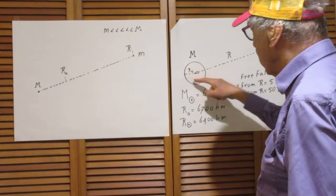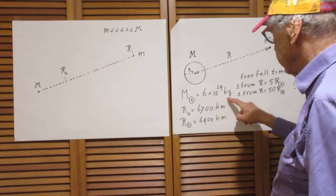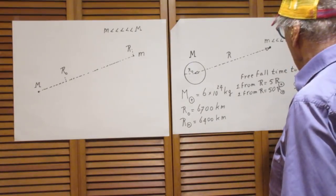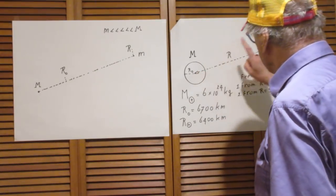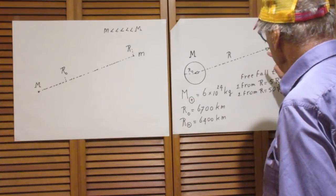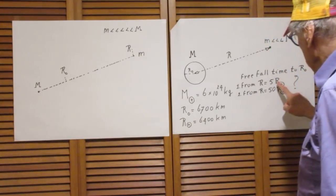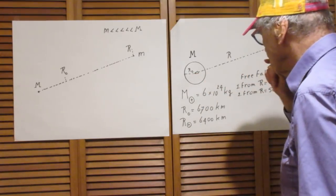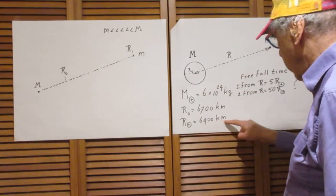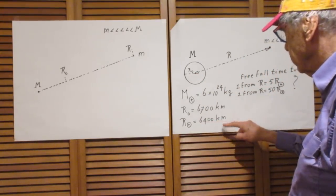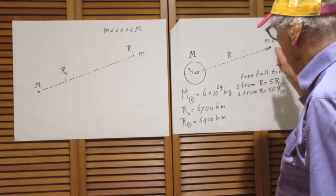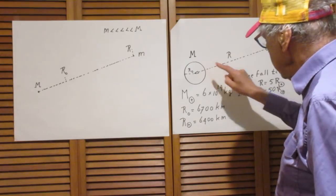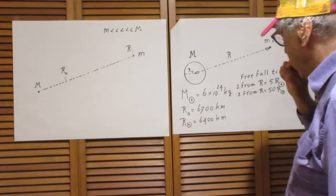We'll take the Earth, which has this mass. It's a good approximation. We take an object, little m, which is five Earth radii away from the center. And this is roughly the radius of the Earth.